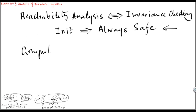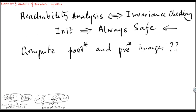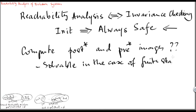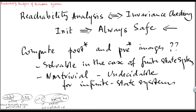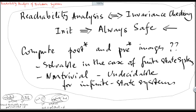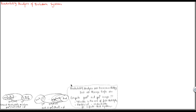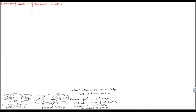The main question is how to compute post-star and pre-star images. This problem is solvable in the case of finite state systems, meaning systems that have a finite set of configurations. However, this problem is non-trivial and in general undecidable beyond finite state systems. We are going to address this problem for a particular class of infinite state systems, which are pushdown systems.